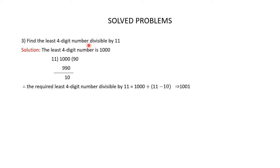Find the least 4-digit number divisible by 11. The least 4-digit number is 1000, but 1000 is not exactly divisible by 11. When you divide 1000 by 11, you get 10 as the remainder. The required least 4-digit number divisible by 11 is equal to the least 4-digit number plus divisor minus remainder, that is 1000 plus 11 minus 10. 11 minus 10 is 1, so 1000 plus 1 is 1001. And 1001 is exactly divisible by 11, so 1001 is the least 4-digit number exactly divisible by 11.